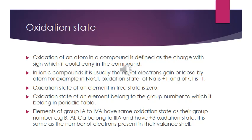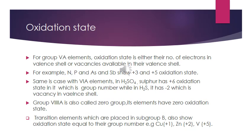For elements belonging to groups 1A to 4A, the oxidation state is the same as their group number. For example, boron, aluminium, and gallium belong to group 3A, and their oxidation state is also +3 — the same as the number of electrons present in the valence shell, which equals their group number. Alternatively, it can be the vacancy available in their valence shell.